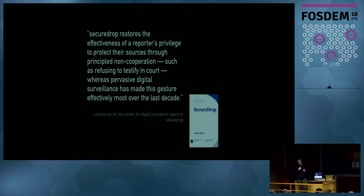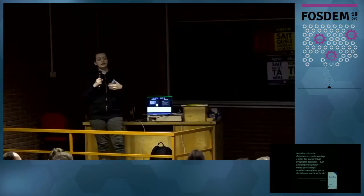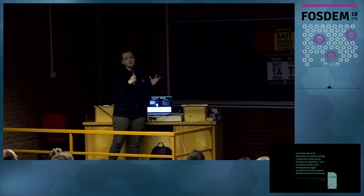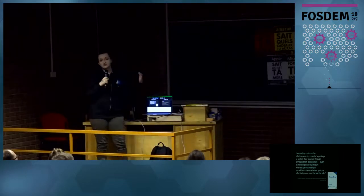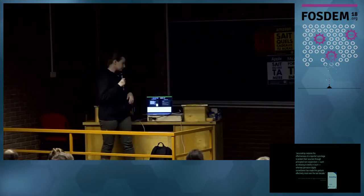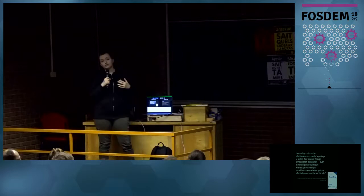The government does not need to ask a journalist who their source is, because there's a data trail they can investigate. Specifically, they can subpoena the phone records of journalists. If I'm trying to talk to someone at the Associated Press, the government can subpoena Verizon, get the telephone metadata, and identify me. This has happened many more times in the past 15 years than in the entire history of the U.S., because it's now so easy to do.